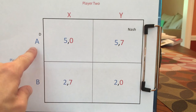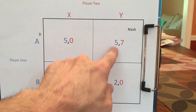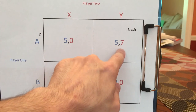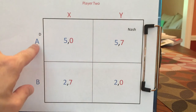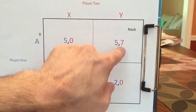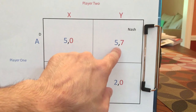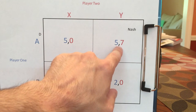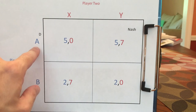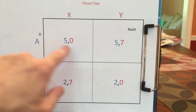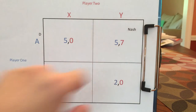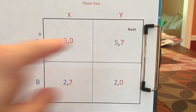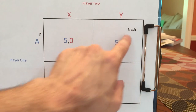If player one plays A, player two would not regret playing Y because, given that player one plays A and player two plays Y, player two gets seven. Player two is not going to say: if I had known the other person would have played A, I would prefer to have played X and gotten zero. So this is a no-regrets outcome — this is a Nash Equilibrium.